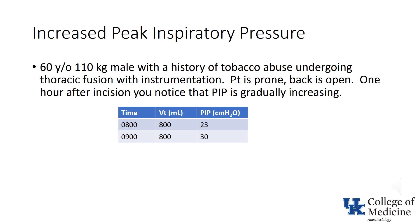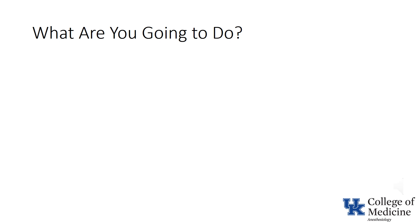The patient, who is undergoing a thoracic fusion in the prone position, develops increasing peak inspiratory pressures during the first hour of the anesthetic. An hour later — that is, two hours after the start of the case — the peak inspiratory pressure has increased from a value of 23 cm of water to 55 cm of water. What are you going to do?